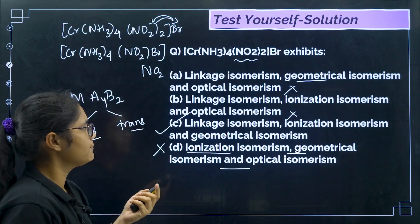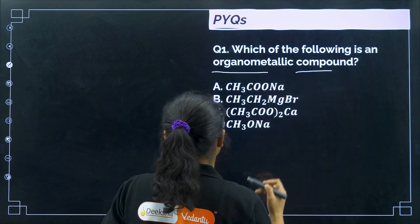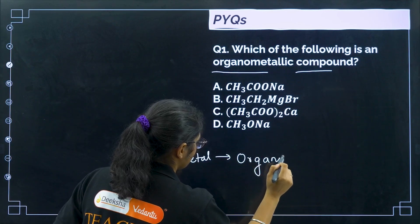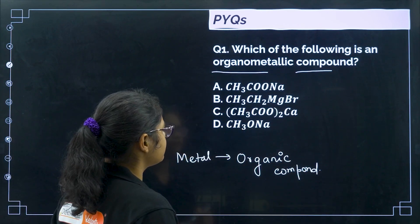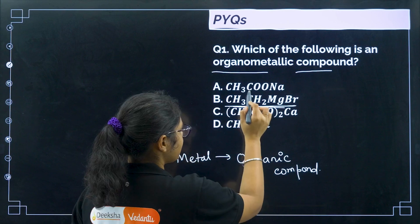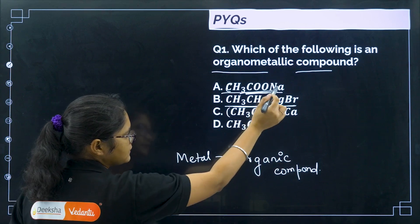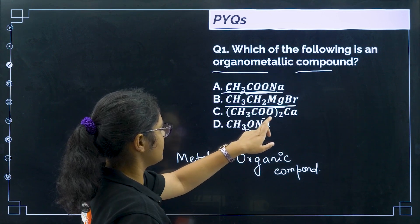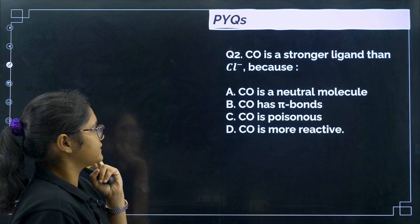PYQ: which of the following is an organometallic compound? An organometallic compound has a metal bonded directly to carbon. The Grignard reagent, CH₃CH₂MgBr, has carbon directly bonded to metal. In the other options, oxygen binds with the metal, not carbon. So the correct answer is option B.